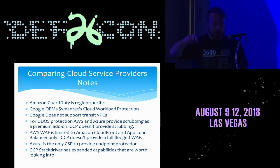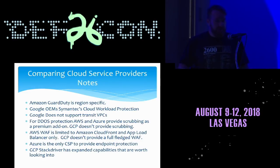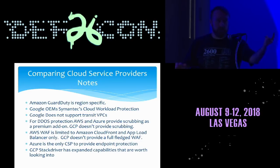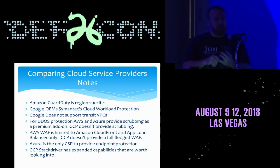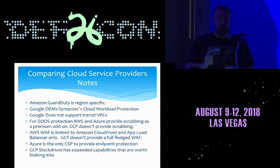I also found out that Google's OEM workload protection is actually Symantec under the hood — they call it Google Workload Protection, but it's just Symantec. If you have opinions about Symantec, there you go. Google does not support transit VPCs. As I said, there are three ways of doing security — agent on a box, APIs, or network. If you're doing network-based stuff, and you probably need to for IR and doing things on the wire, Google does not support transit VPCs. Keep that in mind.